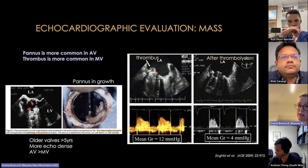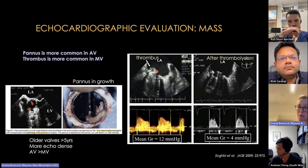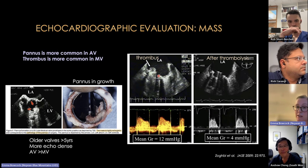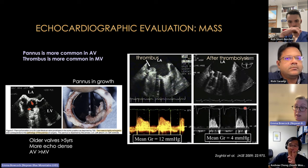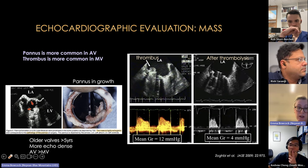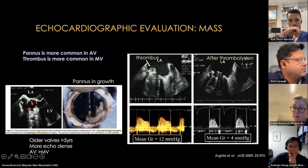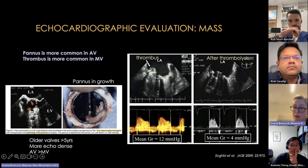A real-life case demonstrates an obstructed mechanical mitral valve with a high mean gradient, showing the mass before and after thrombolysis. This illustrates thrombus on a mechanical mitral valve causing obstruction that responds to thrombolytic therapy.